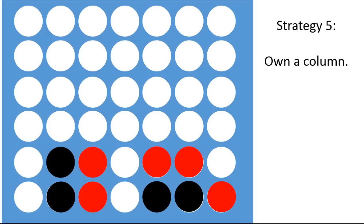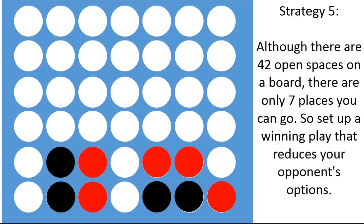Strategy number five. This one's a little bit more complicated. To own a column. If you think about it, the board is set up in six by seven. And six by seven means that there is a total of 42 open spaces on a board. But you can only go in seven of those spaces.